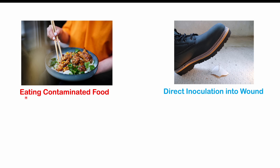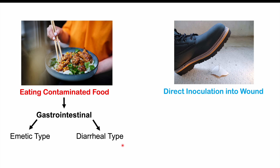If infected by eating contaminated food, we get gastrointestinal symptoms, which can be broken down into the emetic type and the diarrheal type. If we get direct inoculation into a wound — such as soil containing the bacteria entering the wound — we can get extra-gastrointestinal symptoms, meaning symptoms outside of the gastrointestinal system.